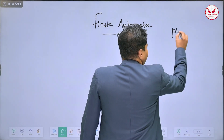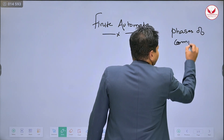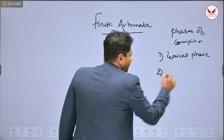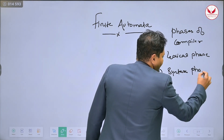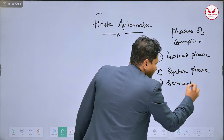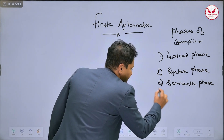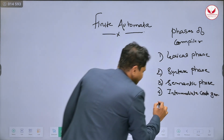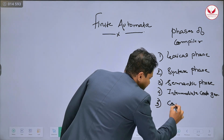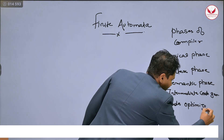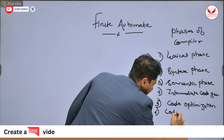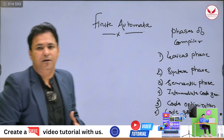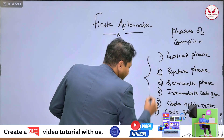If you go through the phases of compiler: the first phase is the lexical phase, second one is the syntax phase, third one is the semantic phase, next phase is intermediate code generation, next phase is code optimization, and the last phase is code generation. In a compiler, we have a total of six phases.